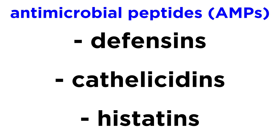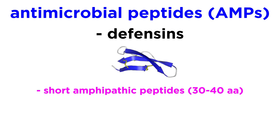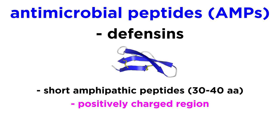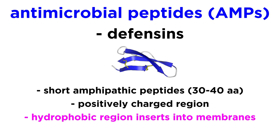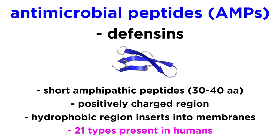There are three main families of AMPs: defensins, cathelicidins, and histatins. Defensins are short, amphipathic peptides about 30 to 40 amino acids in length. These peptides have a positively charged region as well as a hydrophobic region that can insert into bacterial, viral, and fungal membranes and disrupt them. Defensins are some of the most abundant AMPs in mammals, and humans make more than 21 different types of defensins, although plants and other animals can also make them.